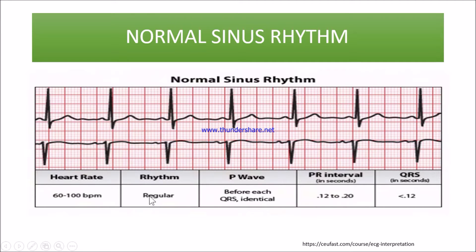The rhythm will be regular — we can see from one R wave to the second R wave, the rhythm is regular. The P wave always precedes the QRS complex. The PR interval is also normal at 0.12 to 0.20 seconds, and the QRS duration is less than 0.12 seconds. This is all about normal sinus rhythm.